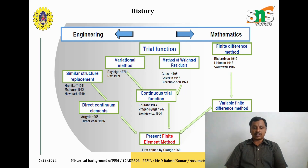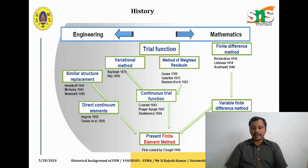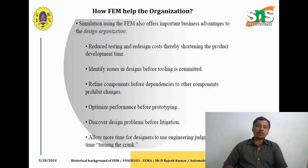Other developments include structural replacement by 1941, direct continuum elements in the 1950s, the continual trial function in 1943, and the variable finite difference method in 1962. Stage by stage it evolved, and finally the term 'Finite Element Method' was coined by Clough in the year 1960.